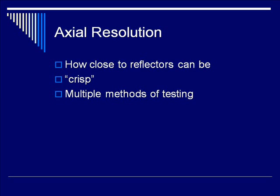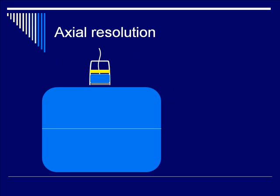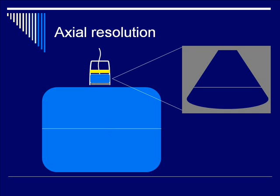Let's start with axial. This is a measure of how close two reflectors can be and still be resolved in the near-field to far-field axis. It's considered a measure of how crisp the image is. This can be tested in multiple ways. The first is to take a phantom with a very thin hyperechoic line and then measure the thickness of this thin line. The thickness of it is the axial resolution because the line is much thinner than you can resolve, so the minimum width it will be given is the resolution.